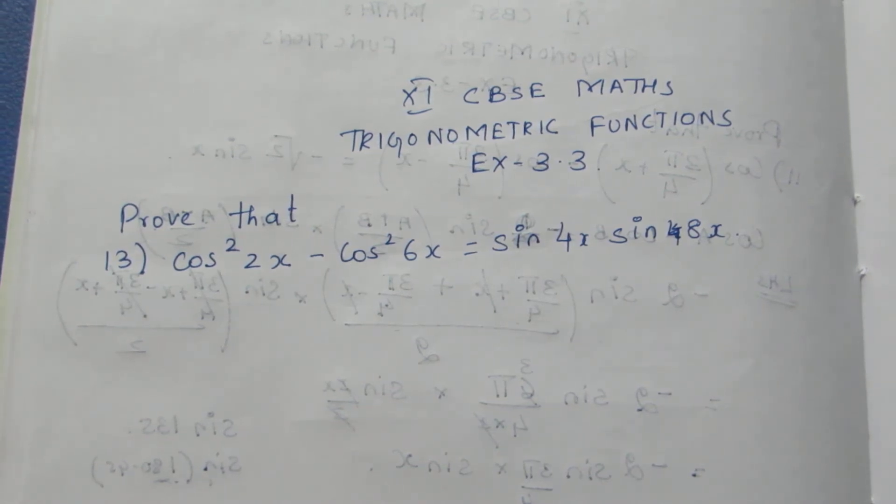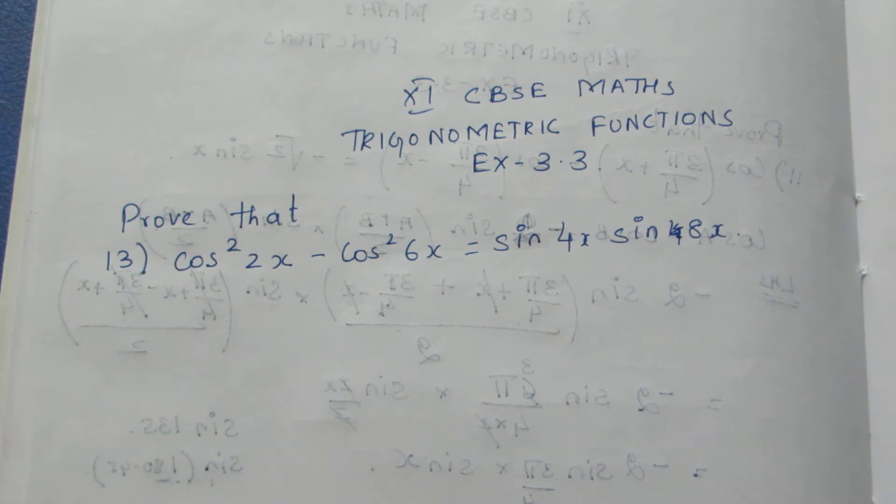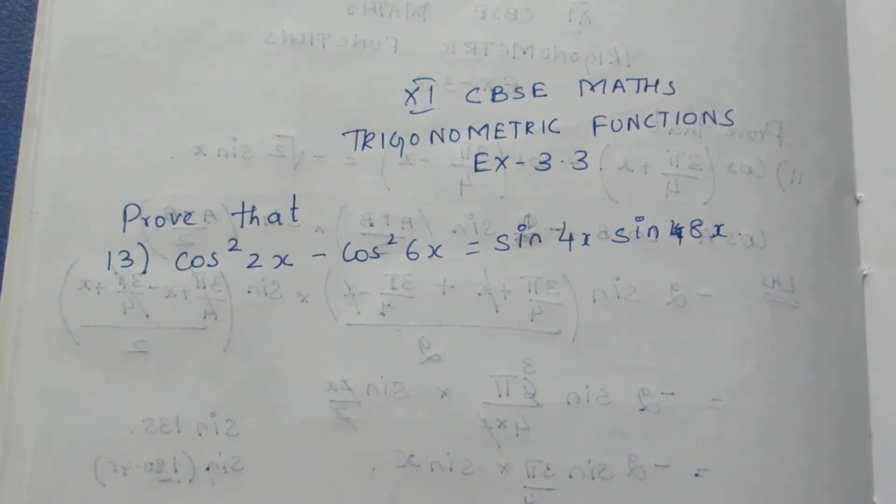Let's see the question. Prove that cos²2x - cos²6x = sin4x·sin8x.